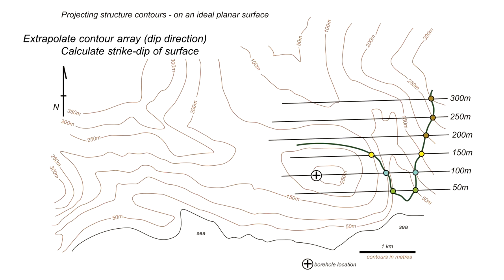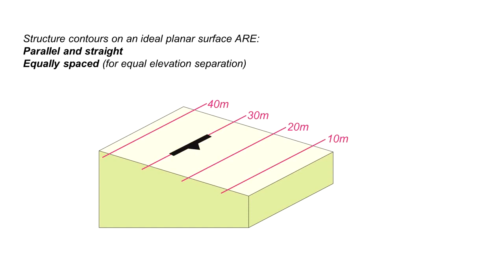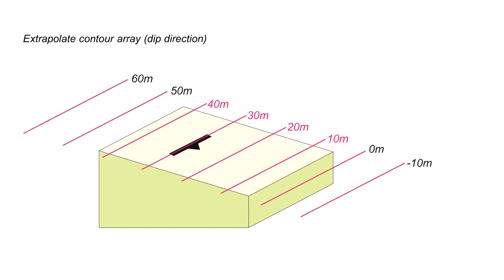So why are these structure contours parallel? Stepping back to a block diagram: for an ideal planar surface, the structure contours are parallel, straight, and coincide with the direction of strike of that surface. They're also equally spaced for equal elevation separation. We can use these two rules — parallel lines and equal spacing — to extrapolate the array in the dip direction by drawing more contours parallel to those already constructed, and use this to forecast the position of the surface.